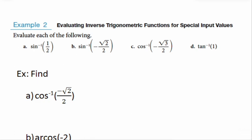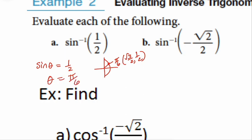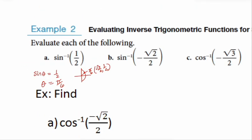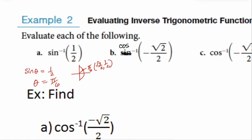Example 2a asks: what angle measure would give me a sine of 1/2? We look for positives in the first quadrant. The point at π/6 is (√3/2, 1/2), so the answer is π/6. Let's change the next one to cosine. For the inverse cosine of negative √2/2, we look for positives in the first quadrant and negatives in the second quadrant.